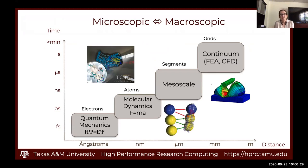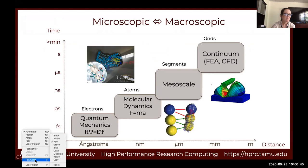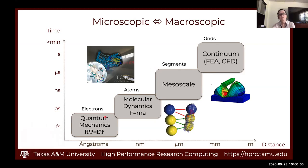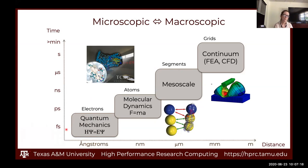Before I get started in quantum mechanics, I'd like to give an overview of microscopic and macroscopic scales to show where we're going to be focusing. We're going to be all the way down at the quantum mechanics level, where we have inclusion of electrons — very, very microscopic scale. We're going to be dealing with the angstrom level, and not really including time directly in these lectures.